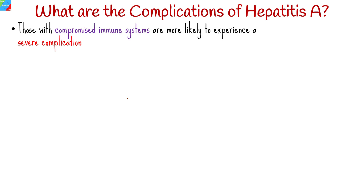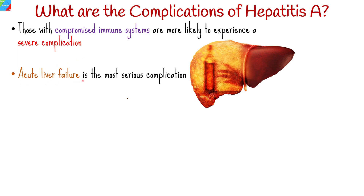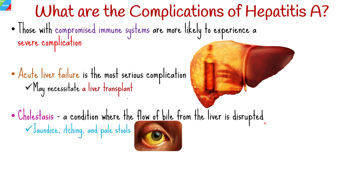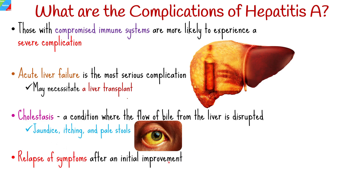Although complications are uncommon, those with compromised immune systems are more likely to experience severe complications. Acute liver failure is the most serious complication; it occurs when the liver suddenly stops functioning properly, leading to rapid deterioration of liver function, and may necessitate a liver transplant. Hepatitis A can also cause cholestasis, a condition where the flow of bile from the liver is disrupted, resulting in accumulation of bile acids, jaundice, itching, and pale stools. In some cases, individuals may experience a relapse of symptoms after initial improvement, accompanied by recurrence of jaundice, fatigue, and other symptoms.